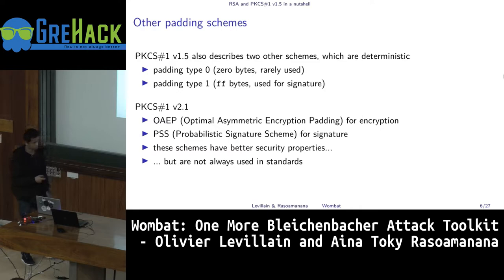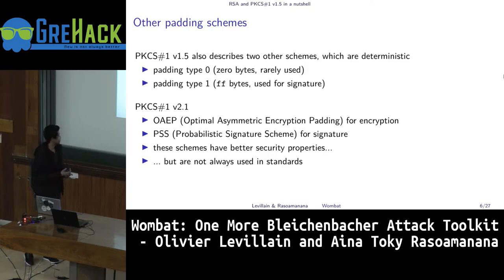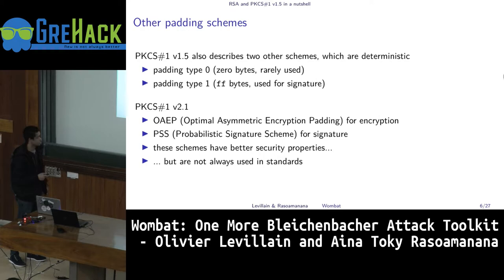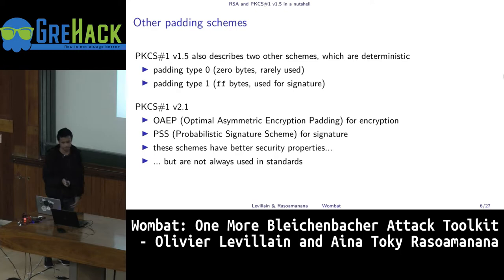Currently, there is also PKCS#1 version 2.1 that describes OAEP — Optimal Asymmetric Encryption Padding — for encryption, and PSS — Probabilistic Signature Scheme — for signature. While PKCS#1 version 2.1 has better security properties, it's not always used in practice.